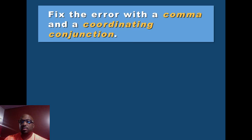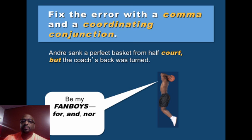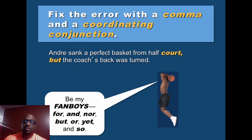You can also fix the error with a comma and a coordinating conjunction. For example: 'Andre sank a perfect basket from half court, but unfortunately the coach's back was turned.' There is an acronym for coordinating conjunctions — it's called FANBOYS: For, And, Nor, But, Or, Yet, So. You can fix a comma splice with a comma and one of the FANBOYS conjunctions.